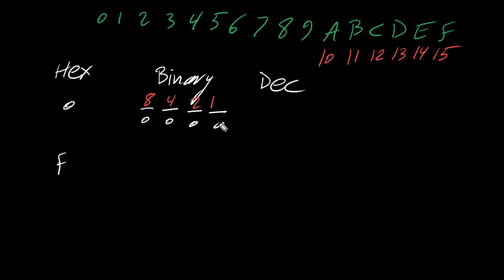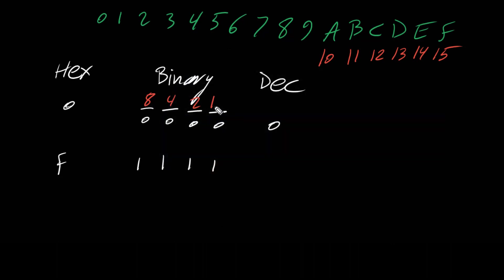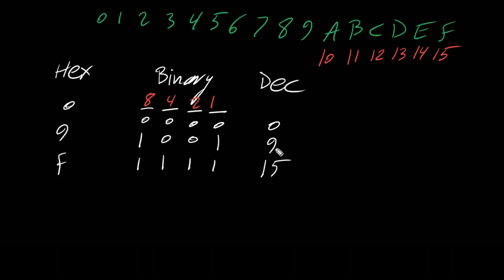If we have a hex value of F, in binary we have four ones — that's 8 + 4 + 2 + 1 = 15, so the decimal value is 15 and the hex digit is F. For a hex number of 9: the 8-bit is on, the 4-bit is off, the 2-bit is off, and the 1-bit is on — that's 8 + 1 = 9. So the decimal value is also 9. Therefore, for every hexadecimal digit we have 4 bits.